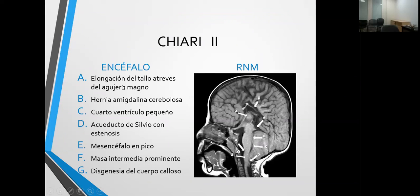En esta imagen vemos la elongación del tallo a través del agujero magno. El tallo va a estar adelgazado, hipoplásico, con tendencia hacia el agujero magno. Esto nos ocasionará que el tallo cerebral y todas sus funciones tengan alteraciones: deglución, disautonomías, dificultad para la respiración autónoma, apneas, disminución de la fuerza, e incluso muerte súbita en los niños, por esta hipoplasia del tallo. La elongación del tallo hacia el agujero magno a veces nos da una hernia de amígdalas cerebelosas, que es de lo poco que se puede resolver quirúrgicamente.